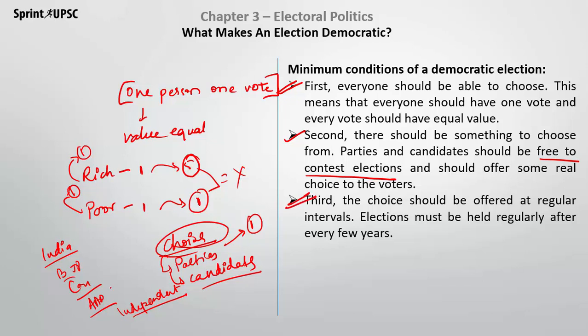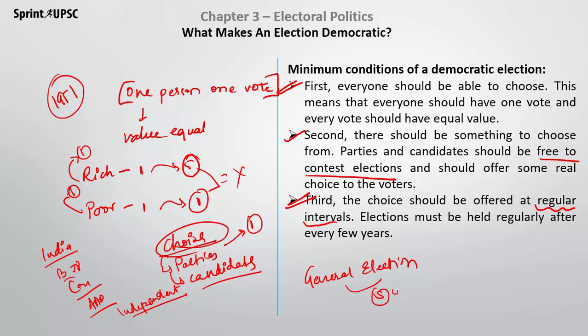The third condition is that choices should be offered at regular intervals. It's not like elections happened once in 1951 and then never again, with one party ruling forever. In India, general elections for MLAs and MPs — Lok Sabha and Vidhan Sabha — are conducted every 5 years. So every 5 years you have the choice to choose from parties, and you can change the government if needed.